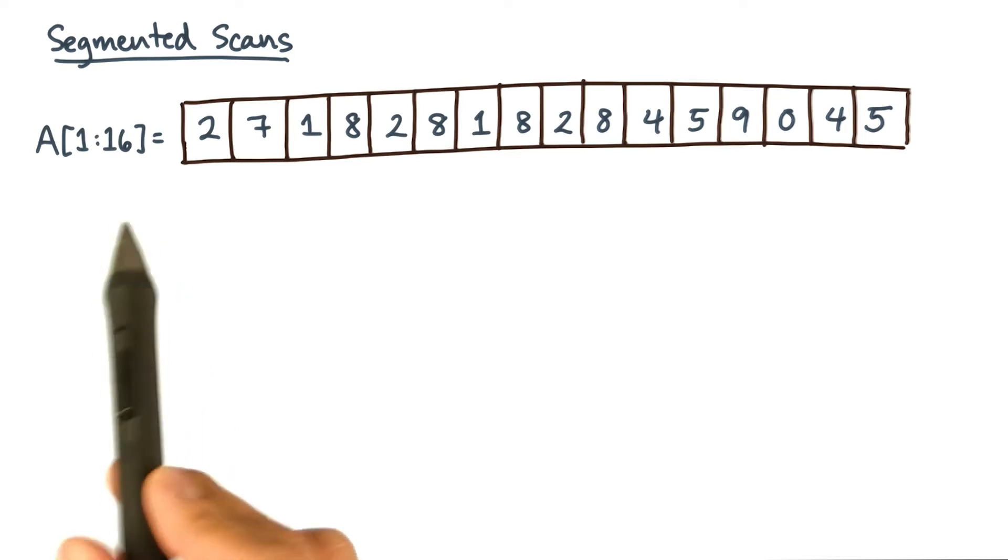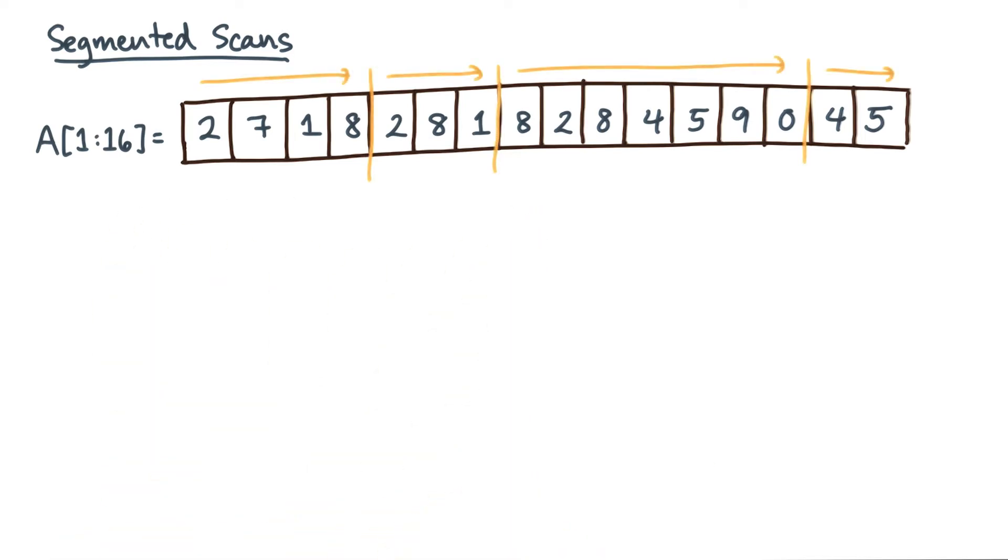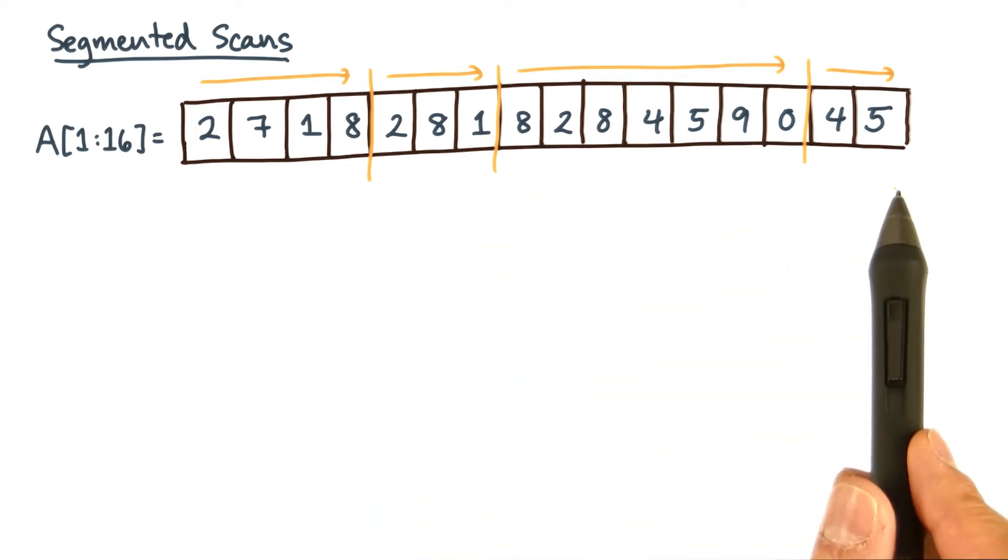I want to tell you about a neat variation on scans called segmented scans. Now suppose I give you this array, and let's say that you want to perform a scan, not on the entire array, but you want to do a bunch of independent scans on segments of the array. In this case, the example is broken up into four segments.